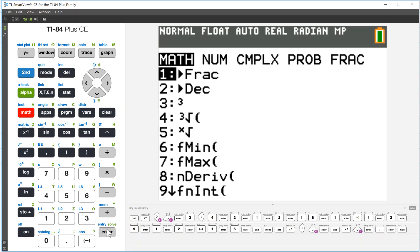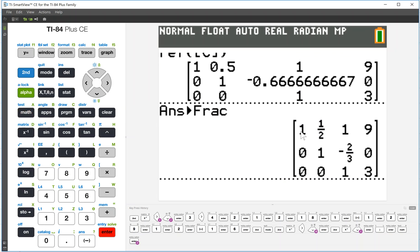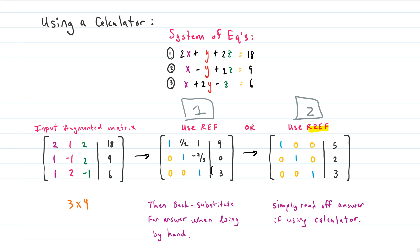So we have REF and now we need to put in the name of the matrix. Our matrix was matrix C, so we need to go back to the matrix area and go to the name spot and we're going to use matrix C. And then we use close parenthesis and we hit go. We can change this to a fraction by using option number one, change it to a fraction and hit enter. And there we go, we have one, one half, one, nine, one, negative two thirds, one, and three.